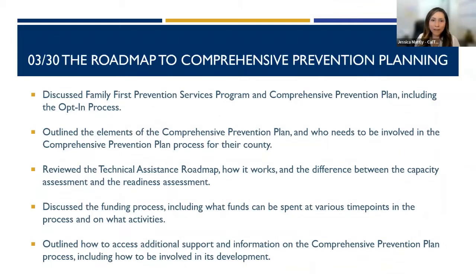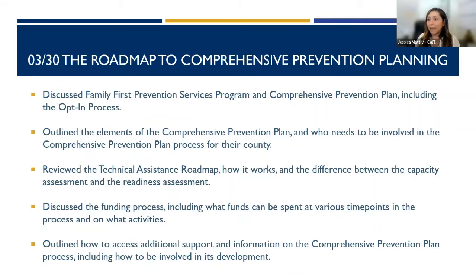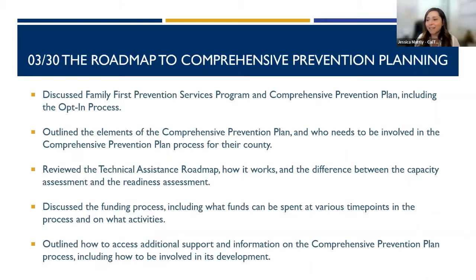As a refresher for what we covered in the March 30th Roadmap to Comprehensive Prevention Planning webinar, there were a few important topics and objectives addressed. We discussed the Family First Prevention Services Program and the Comprehensive Prevention Plan, including the opt-in process. We outlined the elements of the Comprehensive Prevention Plan and who needs to be involved. We reviewed the TA Roadmap, the difference between the Capacity Assessment and the Readiness Assessment, the funding process, and how to access additional support on the Comprehensive Prevention Plan process.